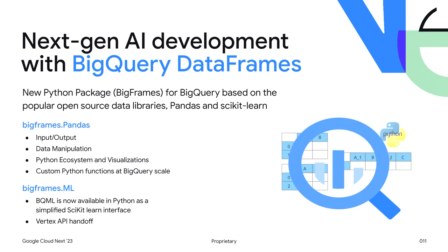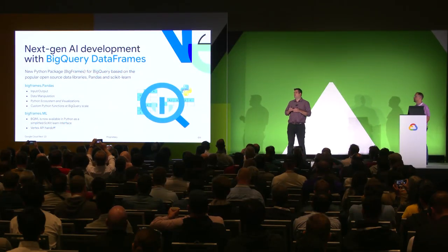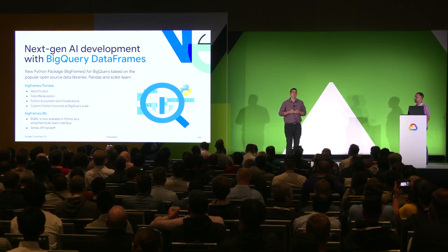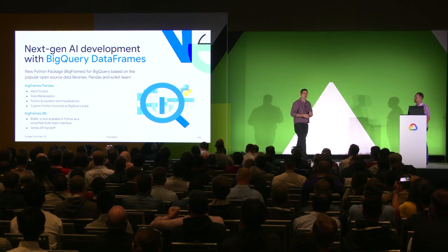The second API is bigframes.ml — essentially BQML exposed as a Python interface. All the BQML functions built into BigQuery are available here. Very soon, there will also be a handoff to the Vertex 2.0 API. So if you have a custom model, you'll be able to hand it directly to Vertex 2.0, and it will understand how to work with that BigQuery data through BigFrames.